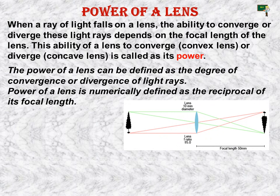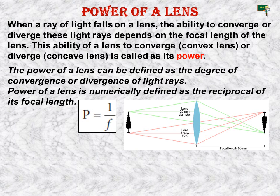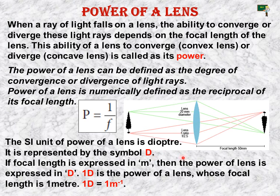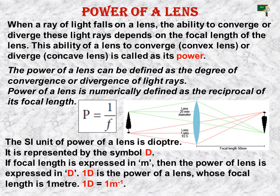Power of a lens is numerically defined as the reciprocal of its focal length: P = 1/F. The SI unit of power of a lens is diopter, represented by the symbol D. If focal length is measured in meters, then the power of a lens is expressed in diopters. 1D is the power of a lens whose focal length is 1 meter, so 1D = 1 m⁻¹. This shows the power of a lens to converge or diverge an image.